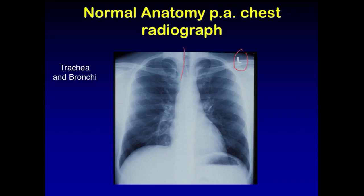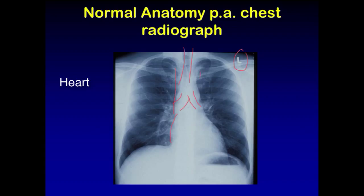First, we identify the trachea, which is a radiolucent structure due to the air that it contains. If you follow the trachea down, you will see the bifurcation of the bronchi to either side. Looking at the structures of the heart, there is the right and left margin, which are determined by discrete anatomic structures. Superiorly, you see the superior vena cava and further lower down, the right atrium. On the left side, the superior structures are represented by the aortic knob, the pulmonary knob, and the left ventricle.